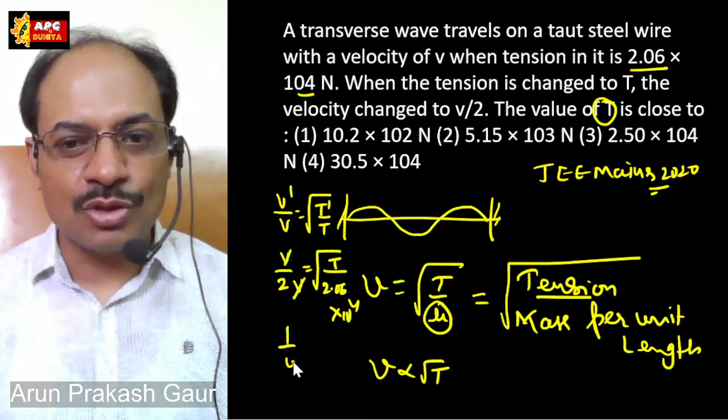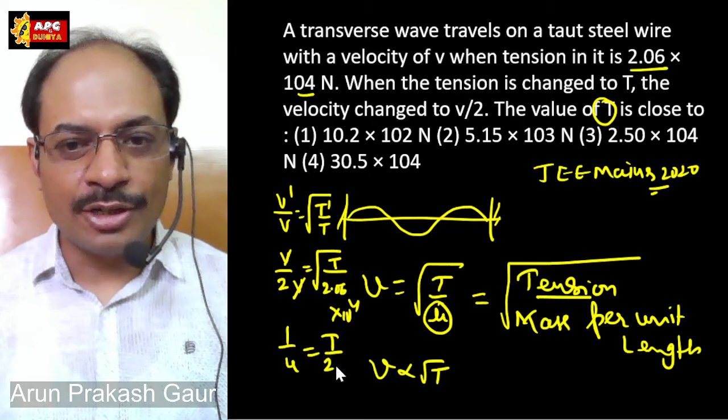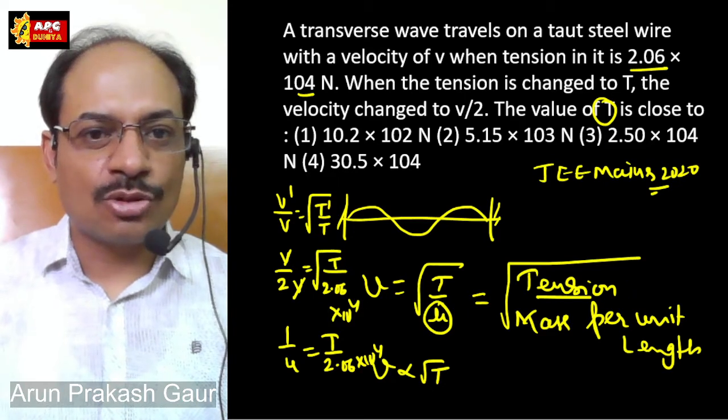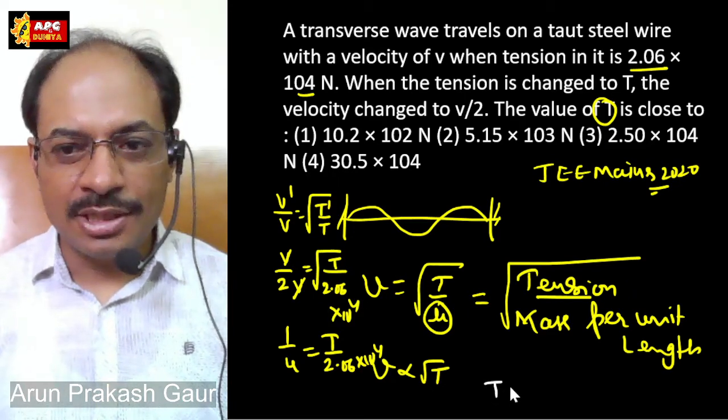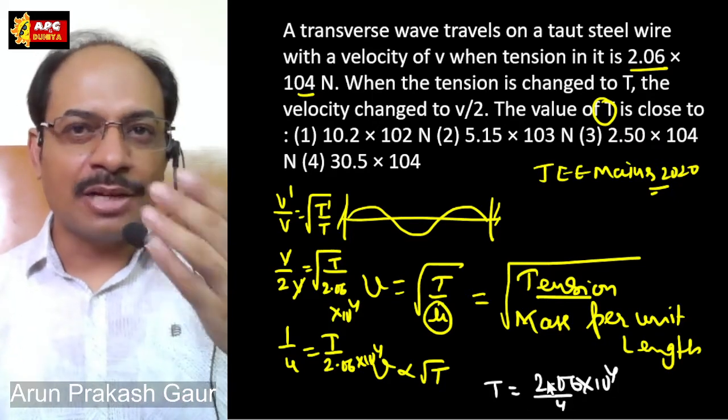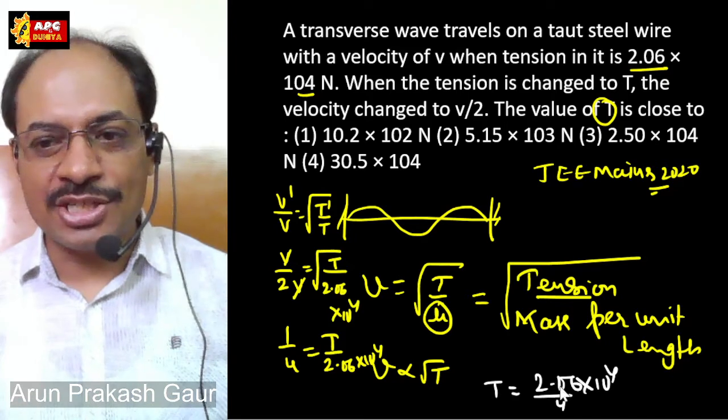If I square both sides, then this is 2.06 into 10 to the power 4. So this T will come, let me calculate once. T will be 2.06 into 10 to the power 4 upon 4.